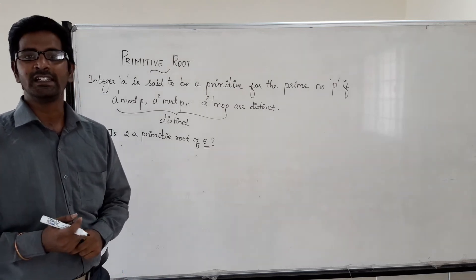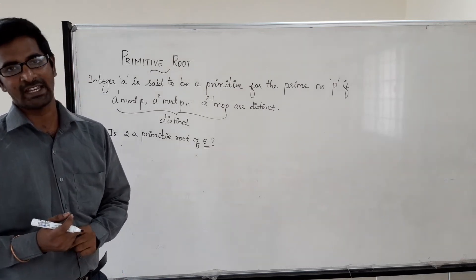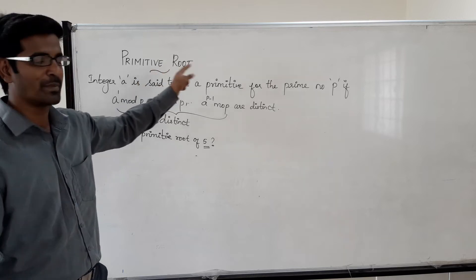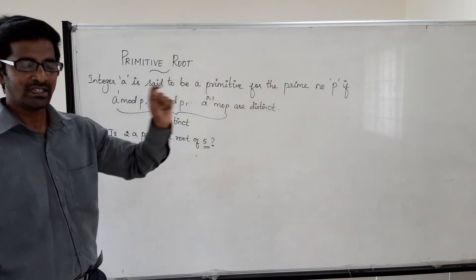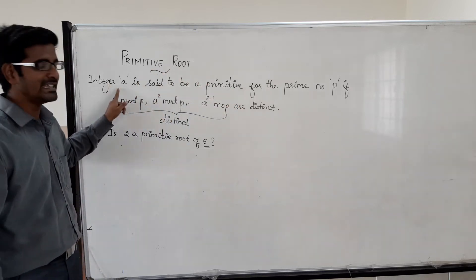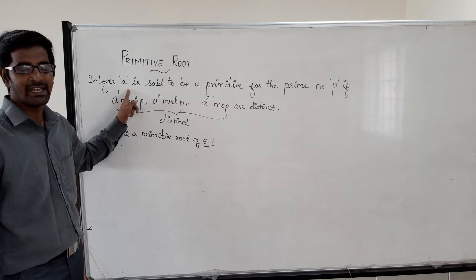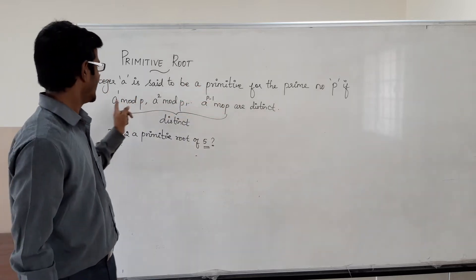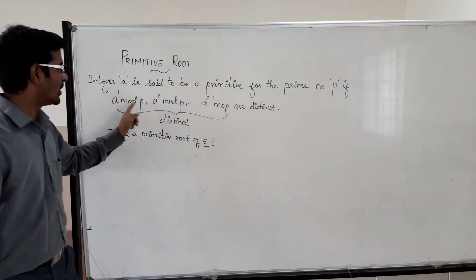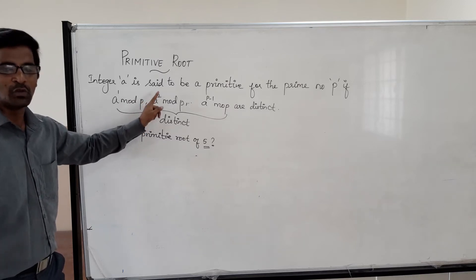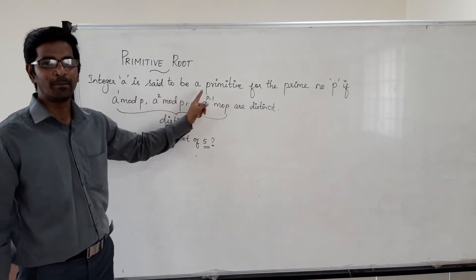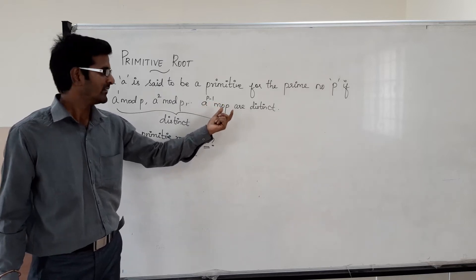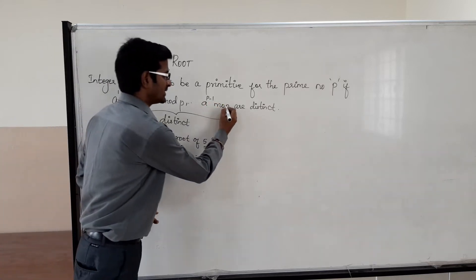Hello, today we will see how to check whether a given number is a primitive root for a prime number or not. The definition goes like this: any integer a is said to be a primitive root if and only if a power 1 mod p, a power 2 mod p, up to a power p minus 1 mod p are distinct, where p is a prime number.